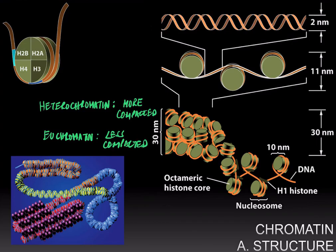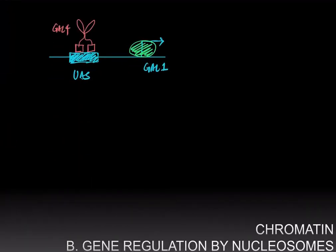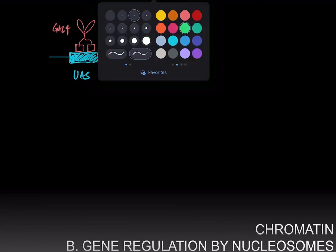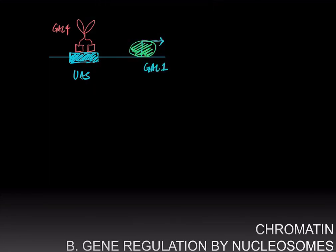How does chromatin play its second role — regulating gene expression? Take the example of the GAL1 gene, which has an enhancer with upstream activating sequences that are bound by GAL4. GAL4 then recruits RNA polymerase, shown here in green, and transcription occurs.